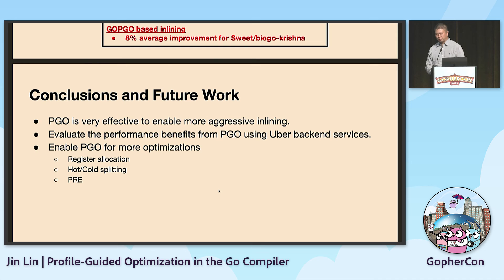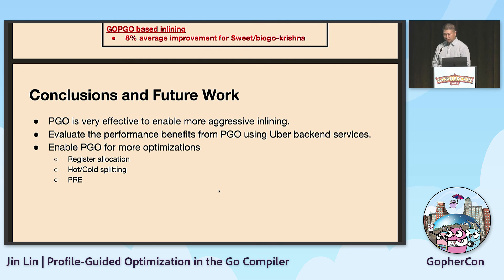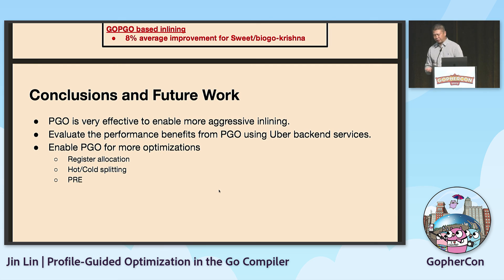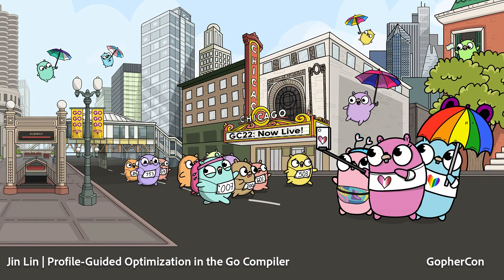In conclusion, profile-guided optimization is very effective at enabling more aggressive compiler transformations. In the future, we want to evaluate the performance benefits of PGO using Uber backend services, and enable PGO for more optimizations like register allocation, hot-cold splitting, and devirtualization. Thank you.